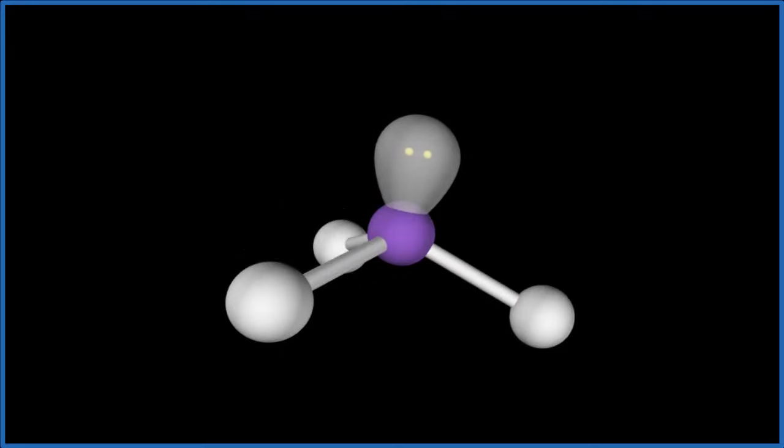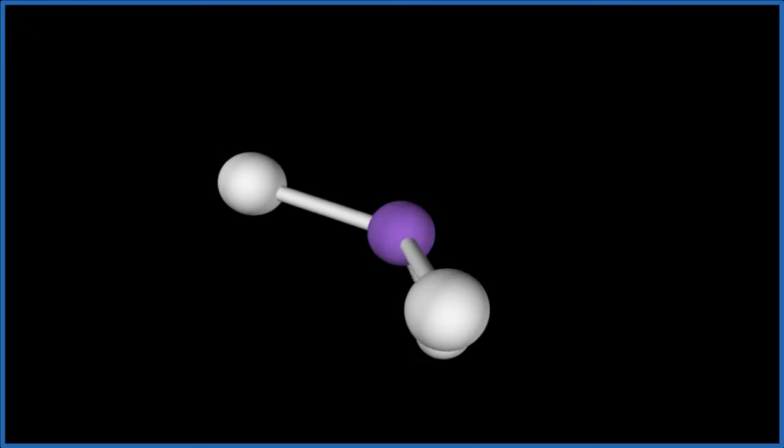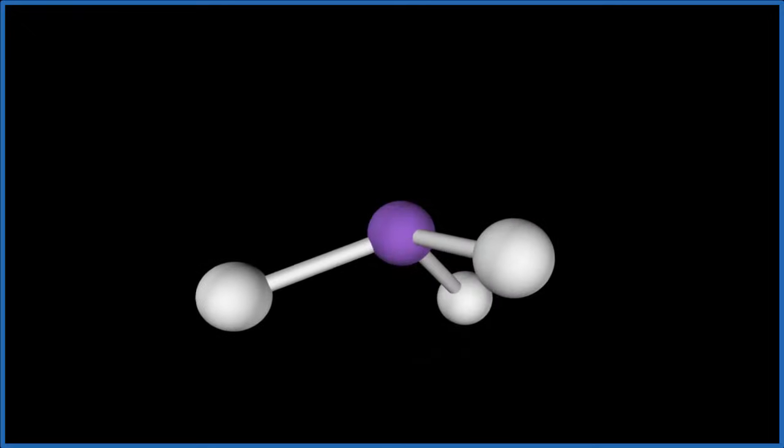When we look at the molecular geometry, we're not really interested in the lone pair. It's still there, we're just going to hide it. So we take the lone pair and hide it. We still have the same geometry—it's still pushing these down. But we can now name this as trigonal pyramidal. It's kind of like a pyramid, and we have those three hydrogen atoms on the bottom.